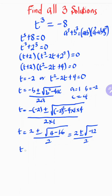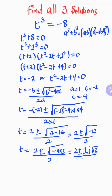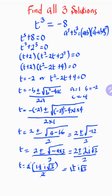Continuing to simplify, we write the square root of negative twelve as the square root of negative four times three, which gives two i root three. The negative sign under the radical introduces the imaginary unit i. Factoring out two, we get t equals two times one plus or minus i root three, divided by two. Cancelling the two, we are left with one plus or minus i root three.